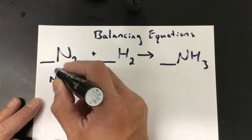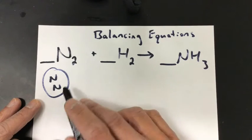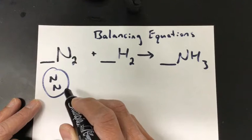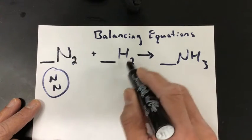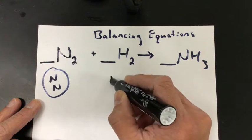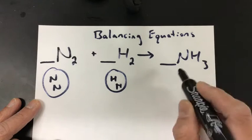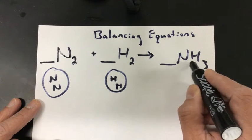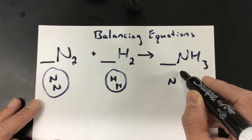For instance, N2. I'm going to put two N's because it has the two after it. So we have two N's and then put this in a bubble, and that just represents N2. I know it has bonds and everything, but for our sake we're just going to put them in a bubble to show that it's together. H2 is also in a bubble, so I have two H's in a bubble.